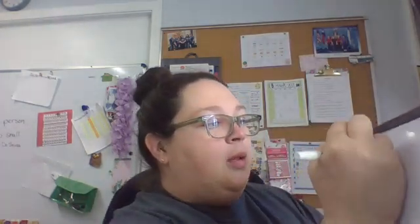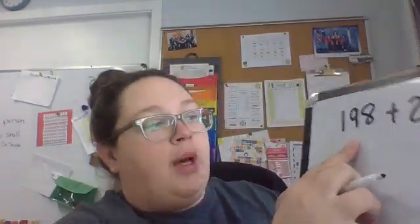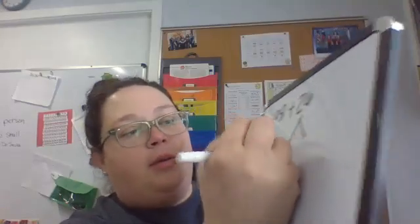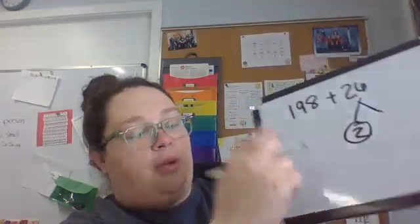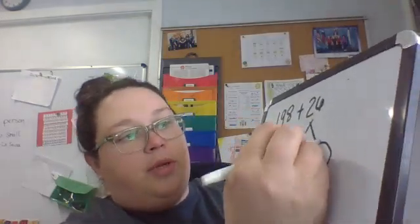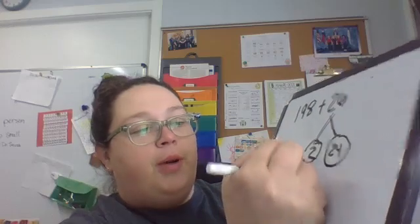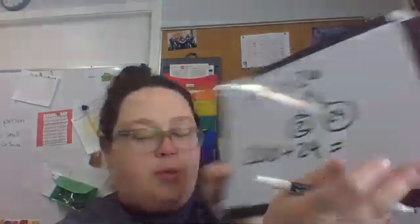So let's say you have 198 plus 26. So 198, how could we get this up to 200? We would take two from here, right? Because then you have 200 plus, and when you take two from there, you would have 24. So then plus 24 is 224.